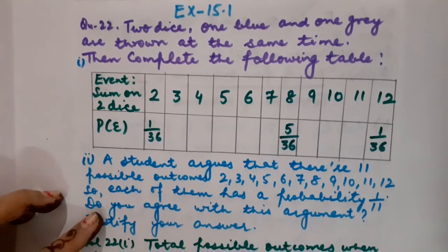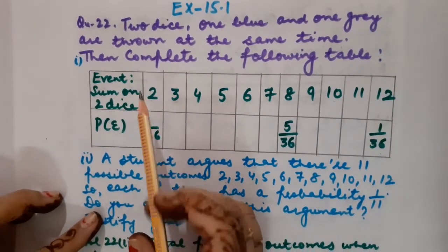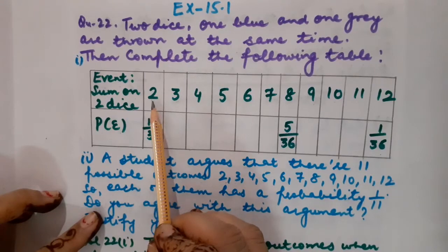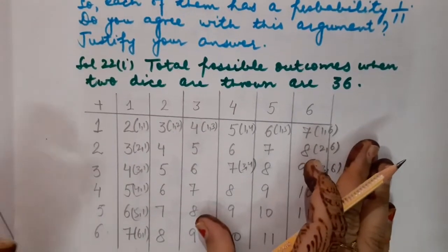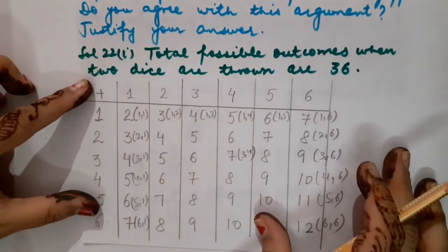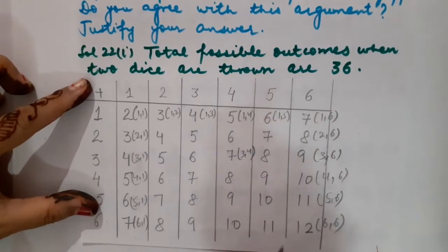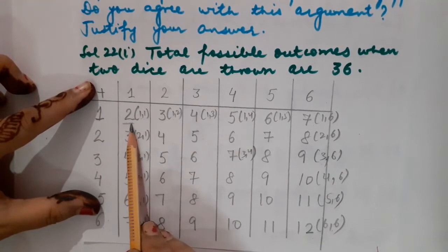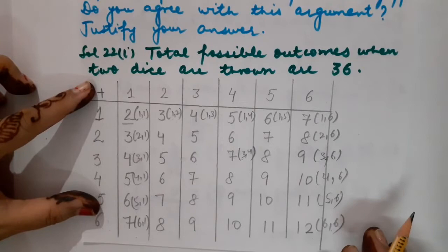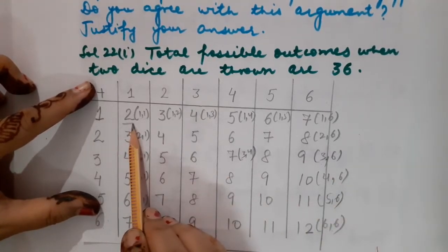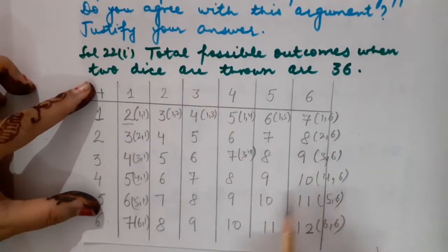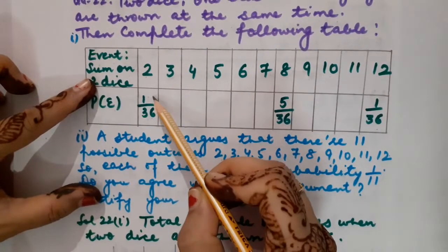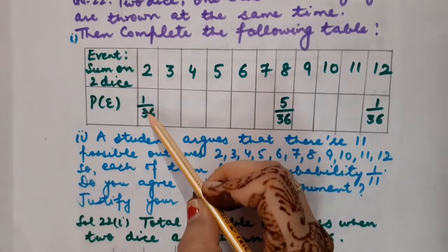Now the table is ready, and we will answer each event. The first event asks for the sum on both dice to be 2. The only favorable outcome is (1,1). We cannot find 2 anywhere else in the table. So there is only one favorable outcome out of 36, giving probability 1/36 — which is already given in the question, so we do not need to solve it.